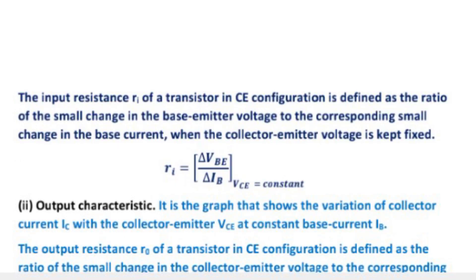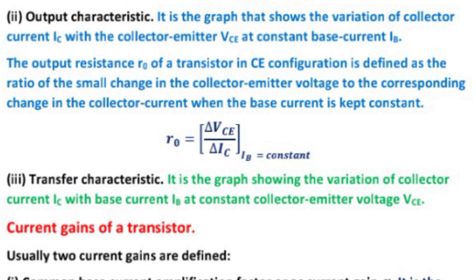At constant collector emitter voltage VCE. The input resistance RI of a transistor in common emitter configuration is defined as the ratio of a small change in the base emitter voltage to the corresponding small change in the base current when the collector emitter voltage is kept fixed. RI equals delta VBE upon delta IB at constant VCE.